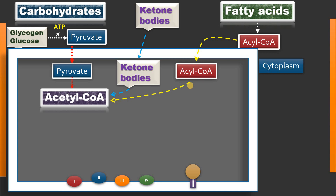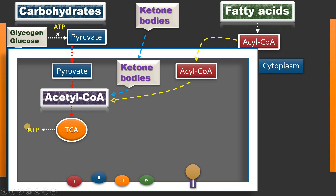In some conditions, amino acids — especially ketogenic amino acids — also give acetyl-CoA after their catabolism. The fate of this acetyl-CoA is that it enters the citric acid cycle or TCA cycle by combining with oxaloacetate. In the citric acid cycle there is generation of ATP, which is also called substrate level phosphorylation, along with reducing equivalents.